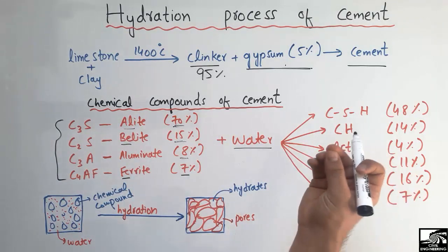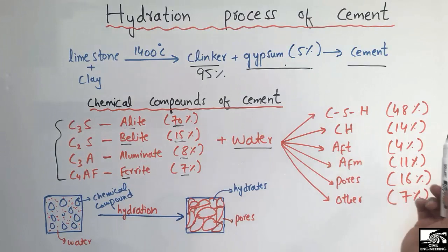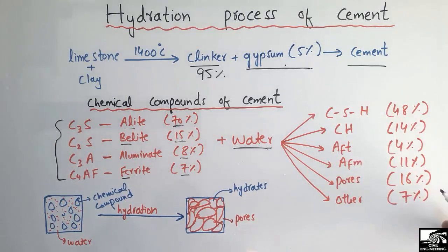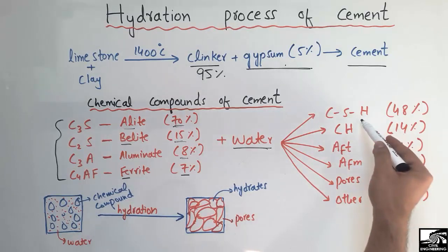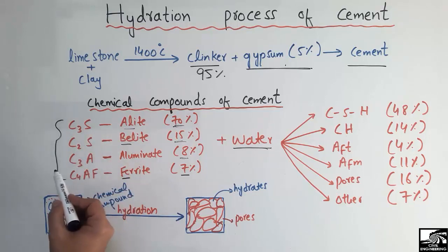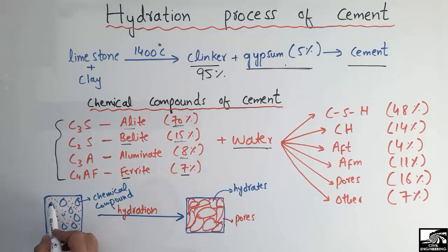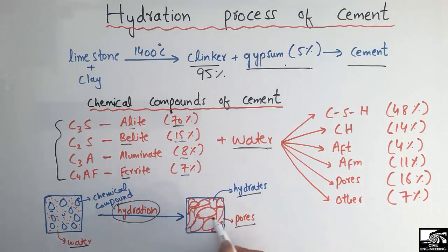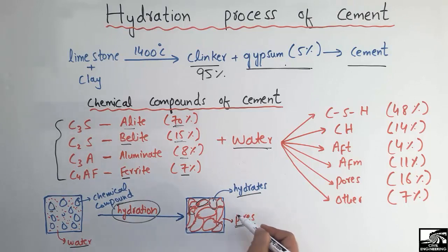Upon addition of water, these chemical compounds form hydrates, which we call the hydration products of cement. As you can see in the diagram, the small red particles are the water molecules and the larger blue particles are the chemical compounds — C3S, C2S, C3A, and C4AF. Upon water addition, a hydration process occurs and they form hydrates along with some pores.